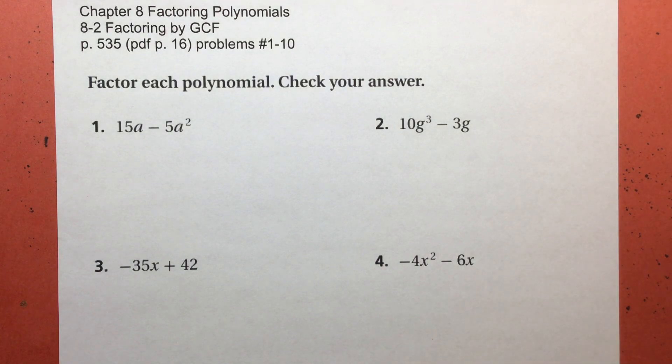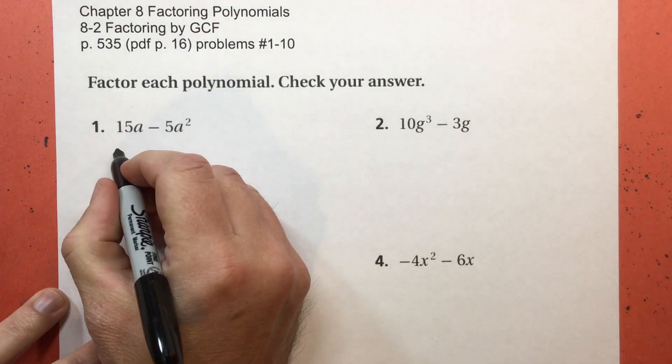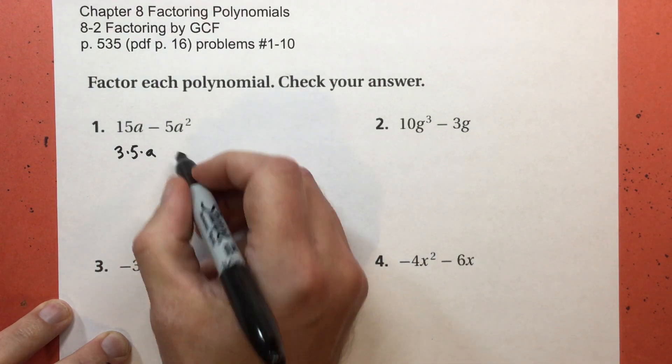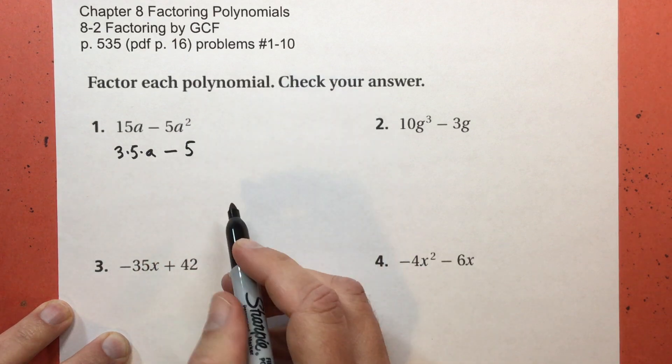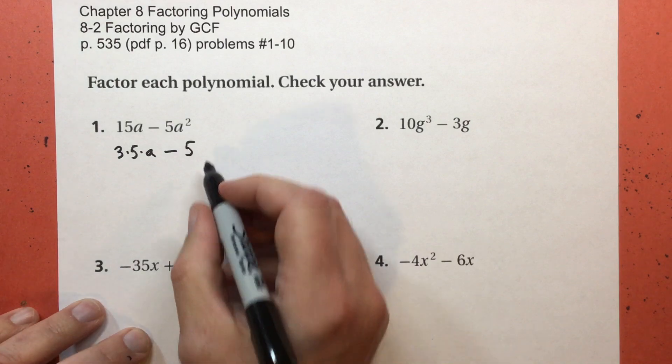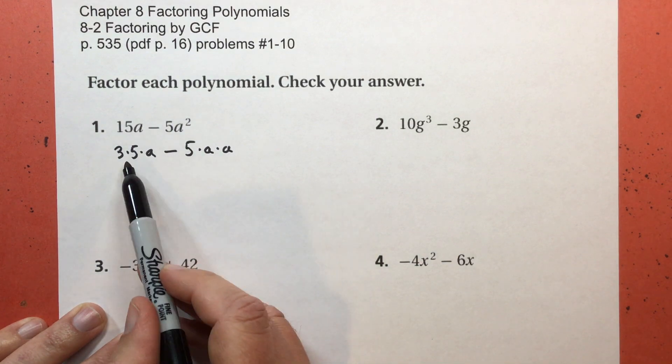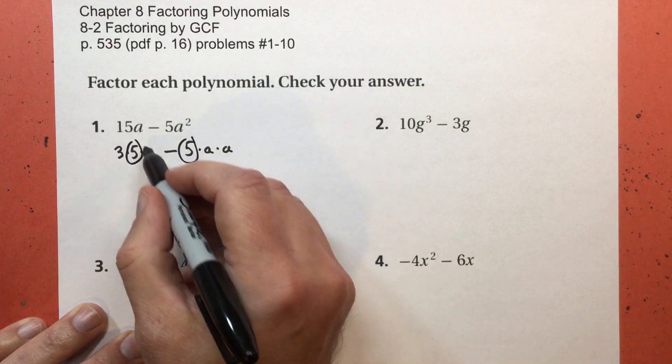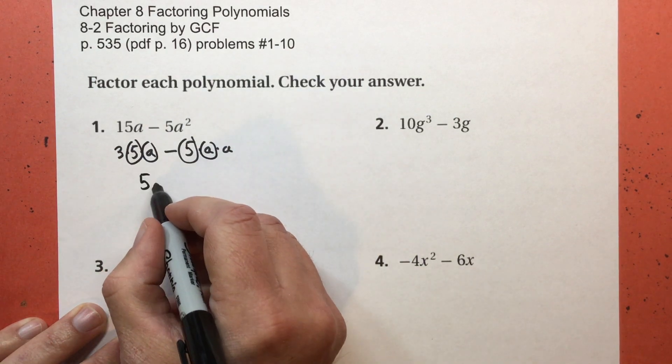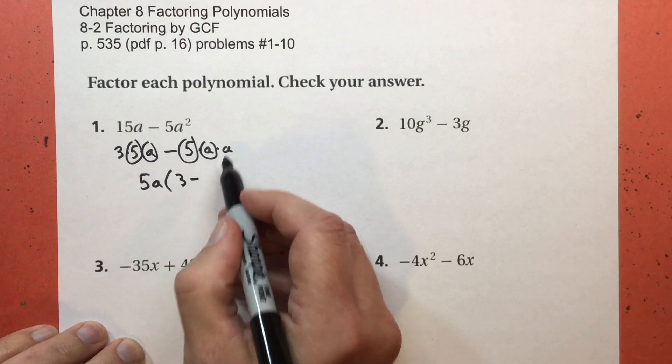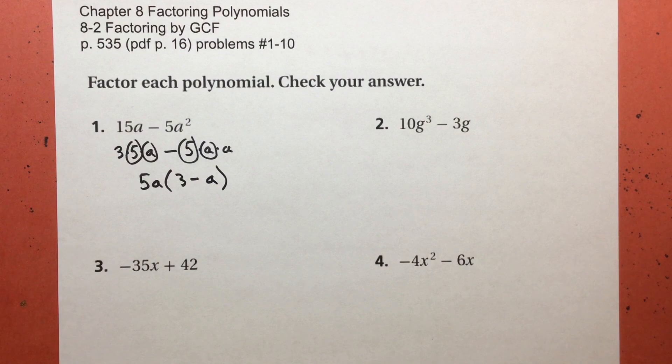I'm going to be factoring by the greatest common factor, the GCF. Think about prime numbers, and think about exponents for the variables. 15, prime numbers, 3 times 5. I only have one A there, so I just multiply by A. Subtract. 5 is already prime. Think about exponents. A to the second power means A times A. Now this term and that term, I have two terms, what do they share in common? They both have a 5, and they both have an A. So my greatest common factor is 5 times A. What got left behind? The 3, the subtract, and the other A. So that's 5A times 3 subtract A.